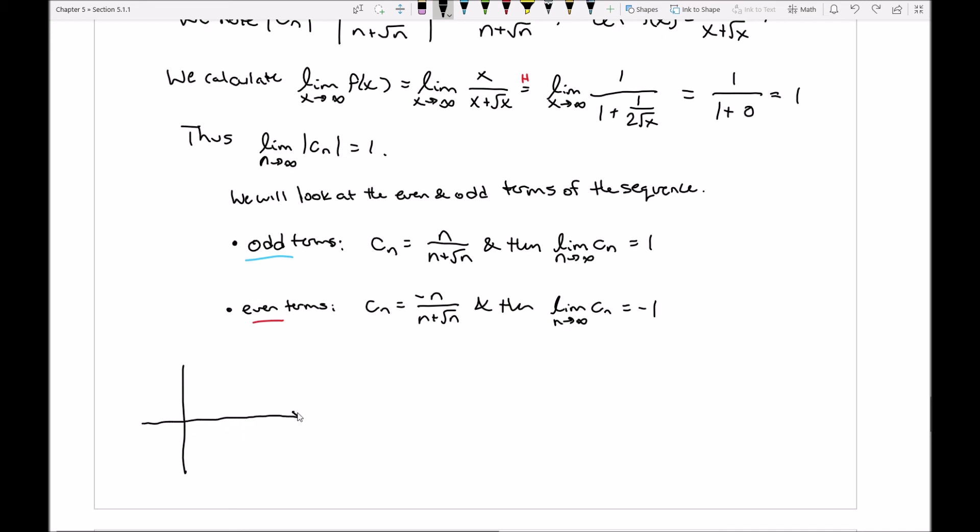But I can see that my blue terms, the odd ones, so like items number 1, 3, 5, 7, they're all going to be getting closer and closer and closer to a value of 1.